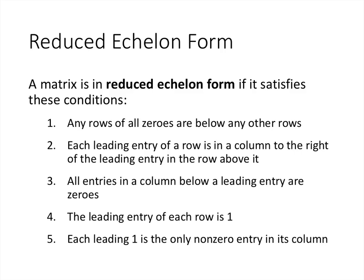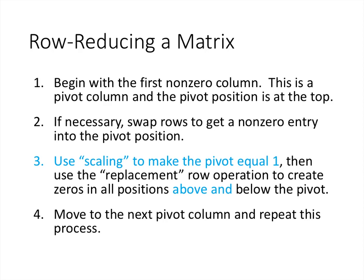Let's talk about reduced echelon form. The first three criteria are the same as for echelon form, but there are two additional criteria: the leading entries must all be 1 — requiring a scaling step — and each leading 1 must be the only non-zero entry in its column. In other words, the numbers both above and below each pivot must be zero. This changes the replacement step: once we identify a pivot, we use a scaling operation to make it equal to 1, and then we use replacement operations to create zeros in all positions above and below, not just below.